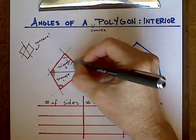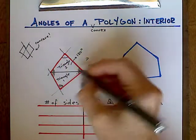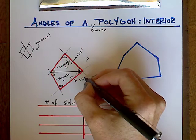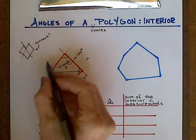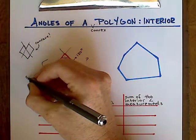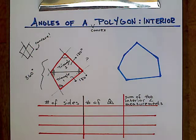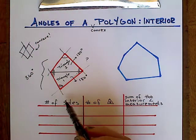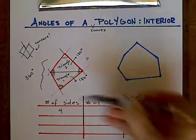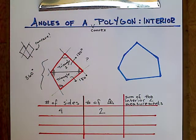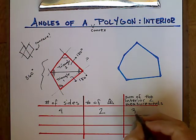All of the angles of the triangles line up with the interior angles of the polygon. So to find the sum of the interior angles, all we need to do is add up the interior angles of our triangles: 180 and 180 added together is 360. So summarizing in our table: this polygon has four sides, we cut it into two triangles, and the sum of the interior angles is 360 degrees.